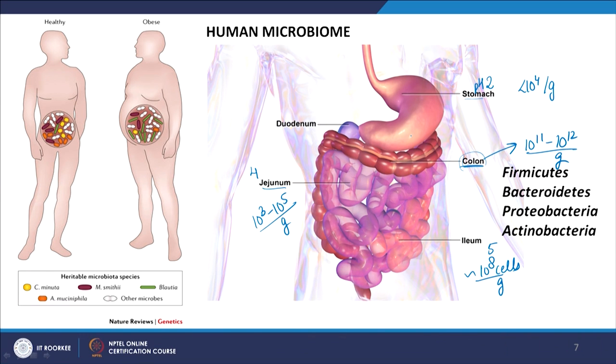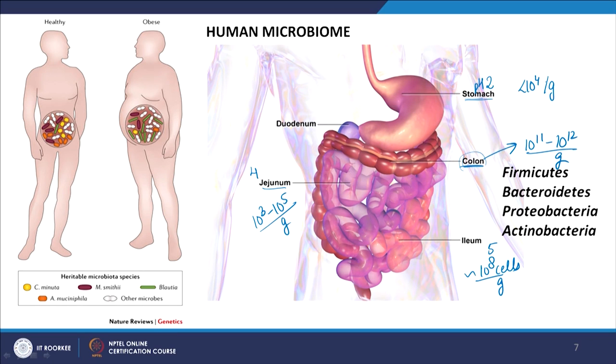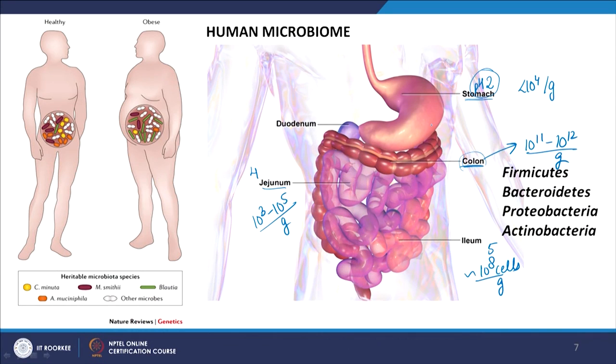H. pylori has a very high correlation with stomach cancer. This is one instance where the presence or absence of a particular microbe matters: if it is present in very low numbers it will not affect much, but if it colonizes extensively, we will have acidity, peptic ulcers, and even stomach cancer.